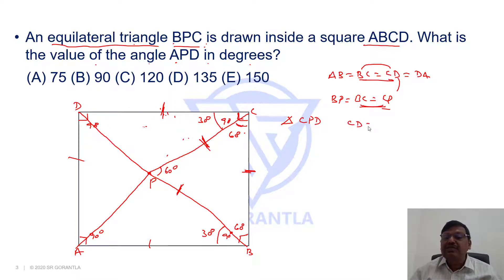When two sides are equal, CD equals CP, their opposite angles are going to be equal. Opposite to CD, we get this angle P. Opposite to CP, we get angle D. These two are equal.